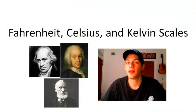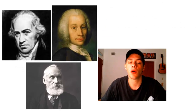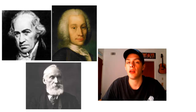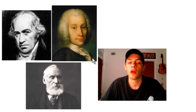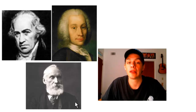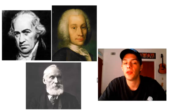In this video I'd like to talk about three of the most commonly used temperature scales: the Fahrenheit scale, the Celsius scale, and the Kelvin scale. The three guys who came up with these scales are Daniel Gabriel Fahrenheit, a physicist, engineer, and glass blower; Anders Celsius, an astronomer; and William Thompson, first Baron Kelvin, also known as Lord Kelvin, who was a mathematical physicist and engineer.